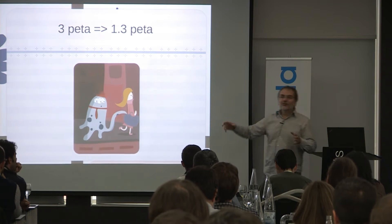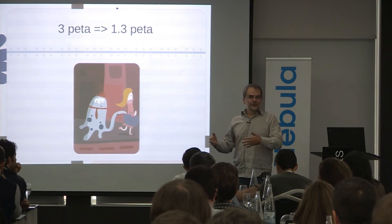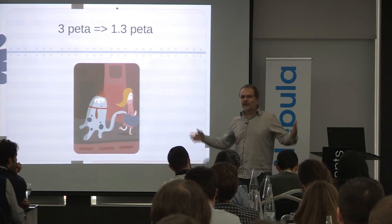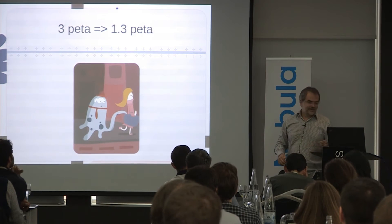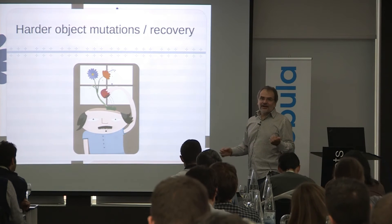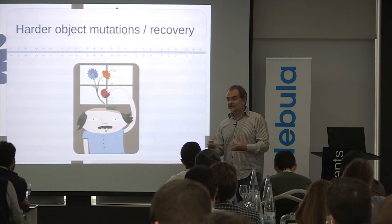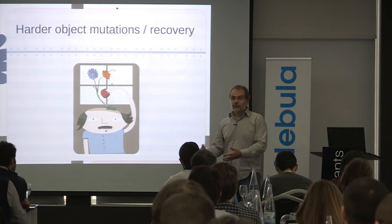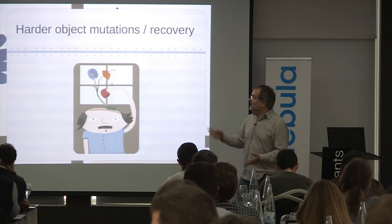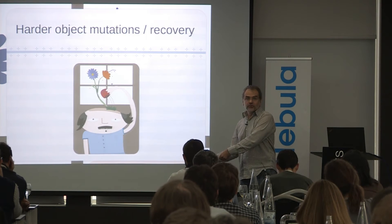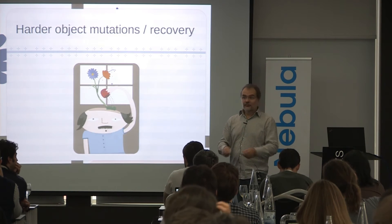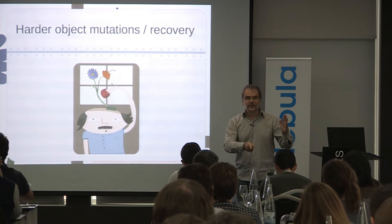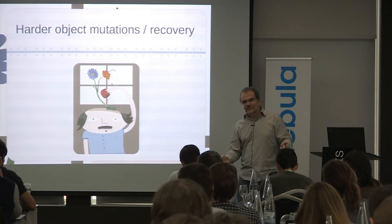You go from having three petabytes with the ability to lose two disks at the same time, down to 1.3 petabytes. When you are a cloud provider, that's quite a win. But it comes at a price — it's not magical. First, it's harder to do object mutations. In Ceph, if you use RBD to provide disks to virtual machines, as OpenNebula does, you cannot use an Erasure-Coded pool because some operations are missing. For instance, you cannot do a partial write — if you write one byte in the middle of four megabytes, you have to recompute everything.